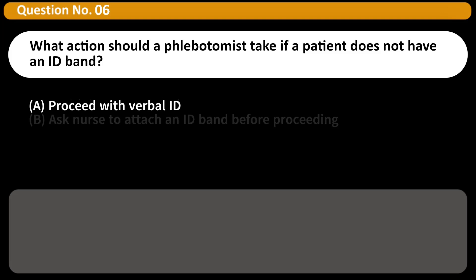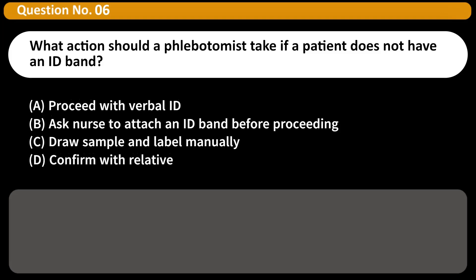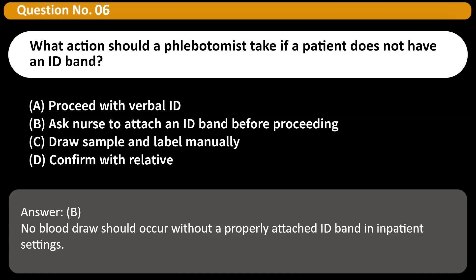What action should a phlebotomist take if a patient does not have an ID band? A. Proceed with verbal ID. B. Ask nurse to attach an ID band before proceeding. C. Draw sample and label manually. D. Confirm with relative. Answer: B. No blood draw should occur without a properly attached ID band in inpatient settings.